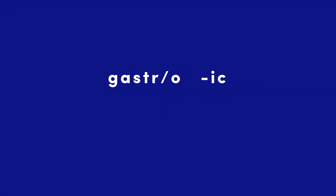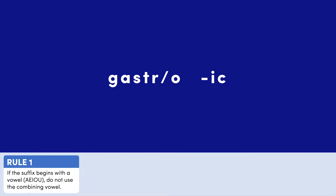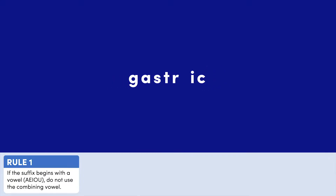When attaching suffixes to other word parts, you need to determine if using the combining vowel is necessary. To make this determination, follow Rule 1, which states: if the suffix begins with a vowel, do not use the combining vowel. Since the suffix here begins with the vowel I, we do not use the combining vowel.